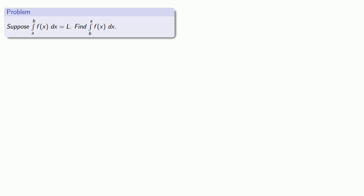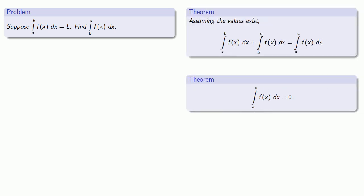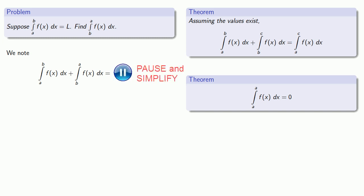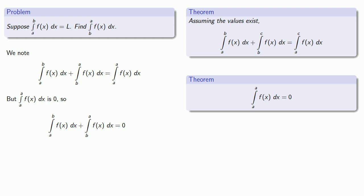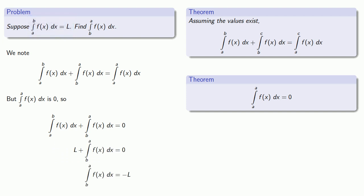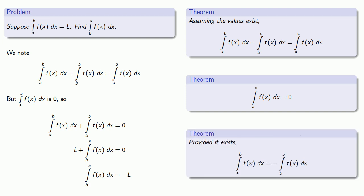Let's put our theorems together. Suppose I know that the integral from a to b is l. What about the integral from b to a? This is sometimes referred to as reversing the direction of integration. If I take the definite integral from a to b plus the definite integral from b to a, our theorem tells us this equals the definite integral from a to a, which is equal to 0. Since I know the first integral is l, I can solve for the other, and that tells me that changing the direction of integration changes the sign of the definite integral.